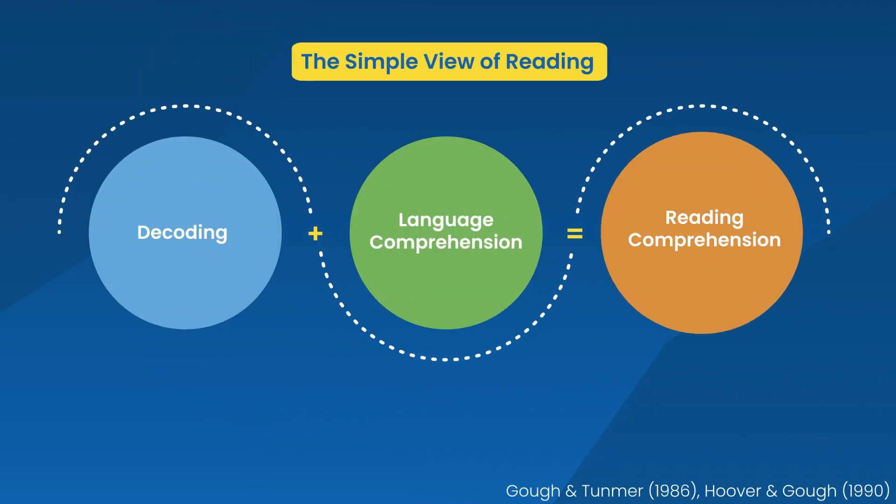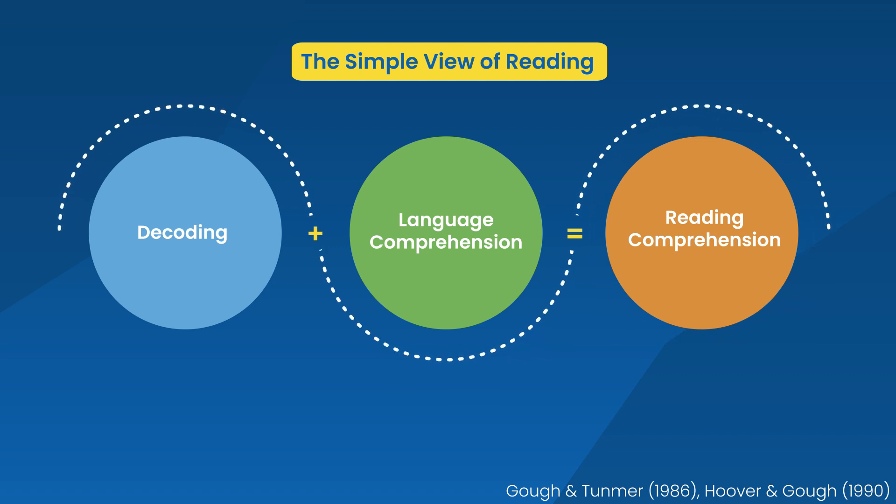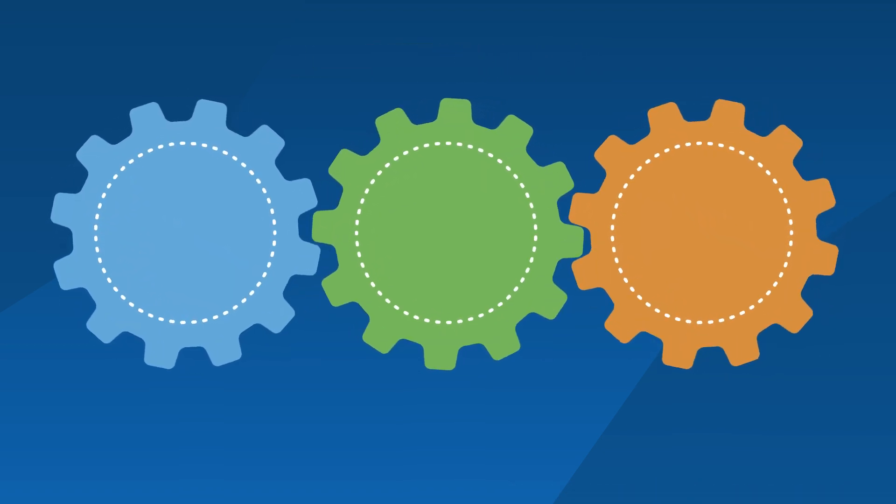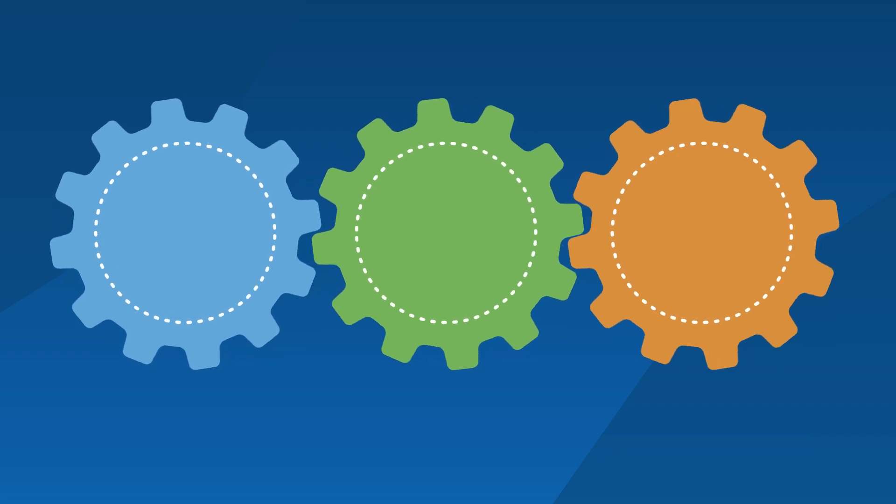which proposes that reading comprehension is the product of two interconnected components: language comprehension and decoding skills. Each of these components are necessary but not sufficient on their own.